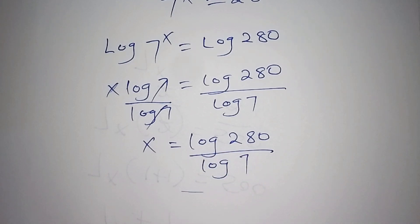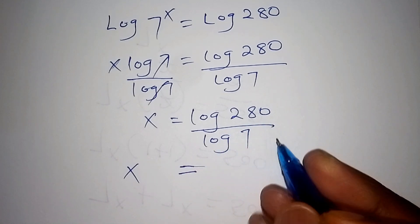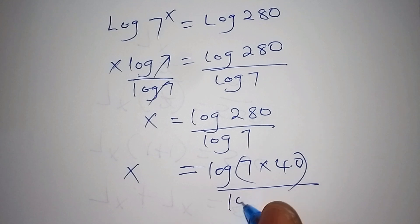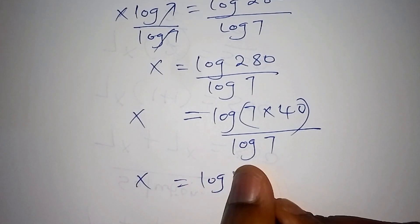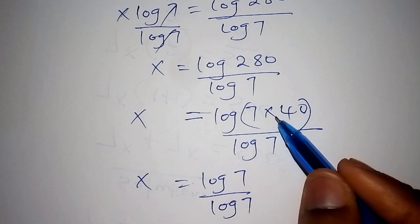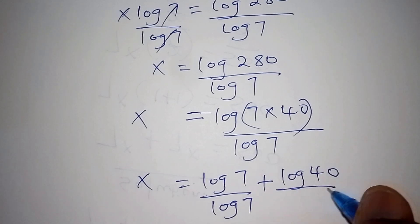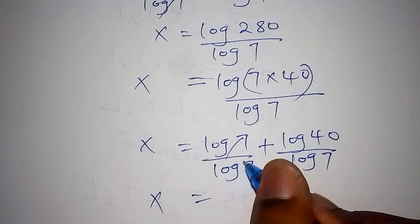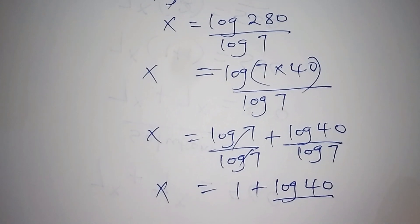We still have to proceed. We shall factorize: the log of 280 can also be written as the log of 7 multiplied by 40, all over the log of 7. Our next step is to split. So x is equals to the log of 7 divided by the log of 7 — and our multiplication sign shall change to addition according to logarithm rules — plus the log of 40 all over the log of 7. The log of 7 and the log of 7 cancel, so now x is equals to 1 plus the log of 40 all over the log of 7.